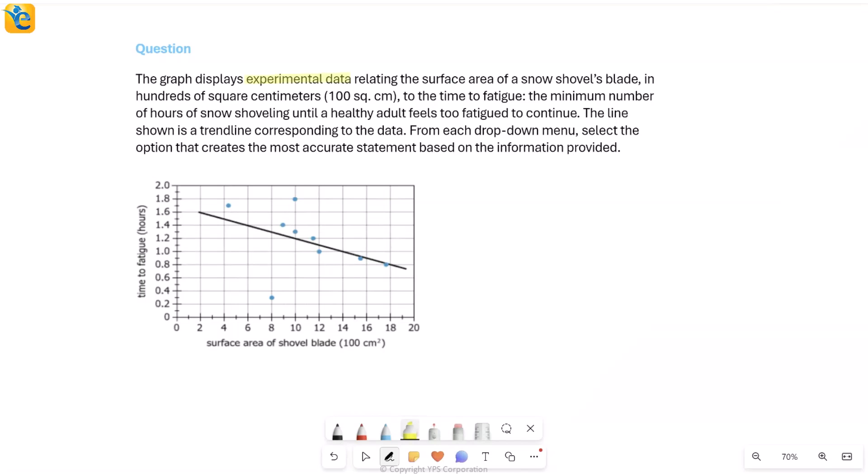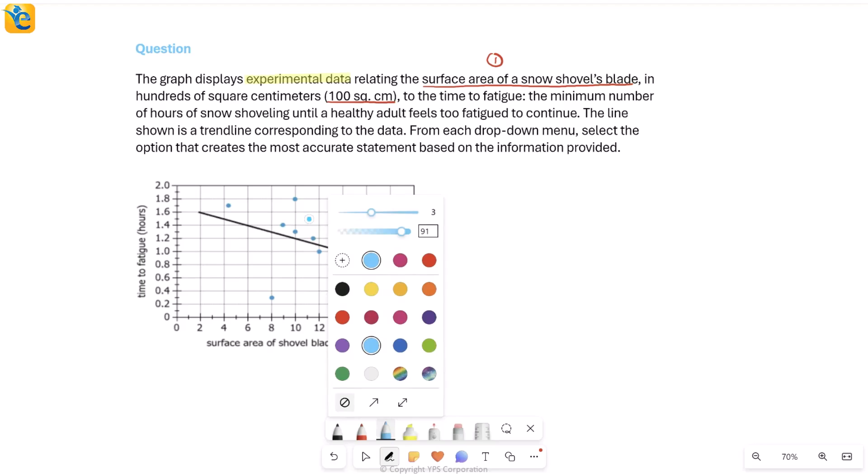This graph represents experimental data, giving us two different quantities. One is the surface area of a snow shovel's blade, and this quantity is given in 100 square centimeters. For example, if I read the value 2 here from my x-axis, this actually stands for 200 centimeter squared.